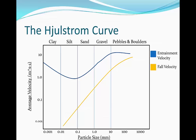The graph is divided up into three areas and the first is called the transport zone. This is the area located under the entrainment velocity, the blue curve, and above the fall velocity, the yellow curve. Entrainment velocity is the velocity needed to pick up the river's particles completely, and the fall velocity is the velocity needed to deposit the river's particles. Between these two zones we have the transport zone, which is moving the particles along the river.